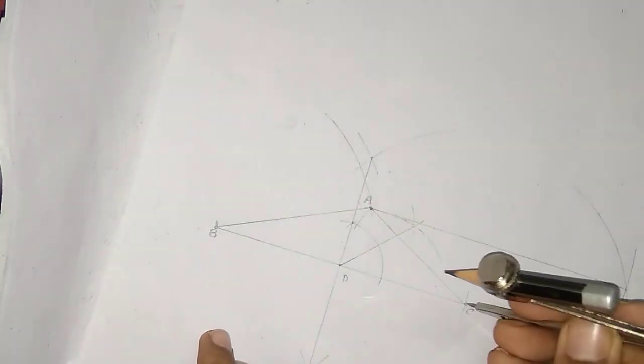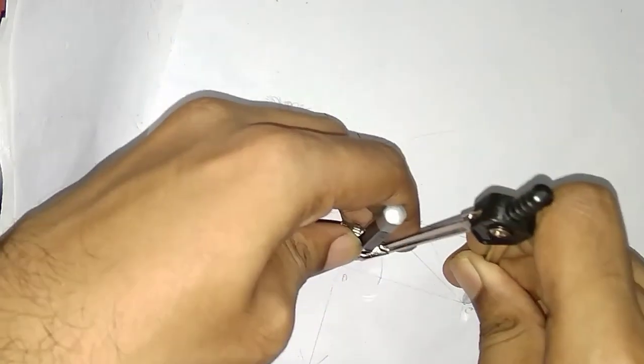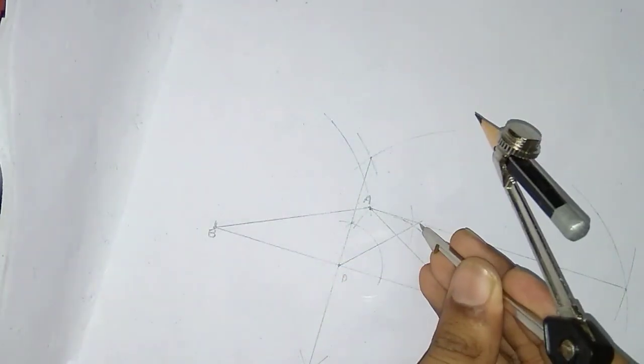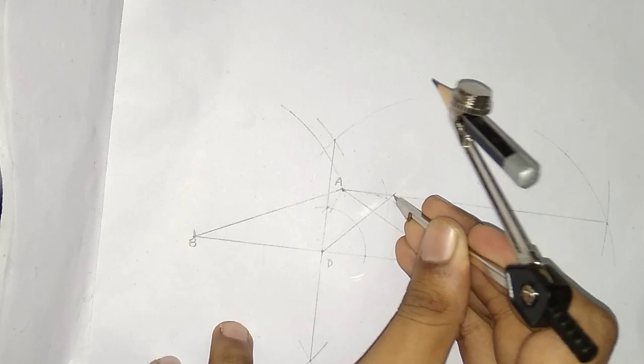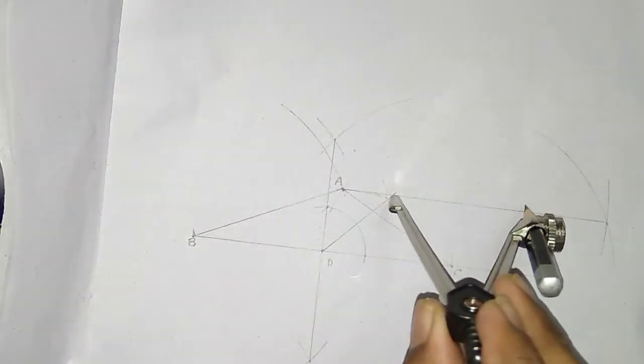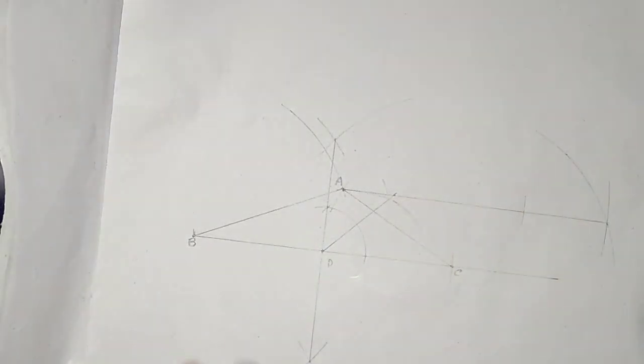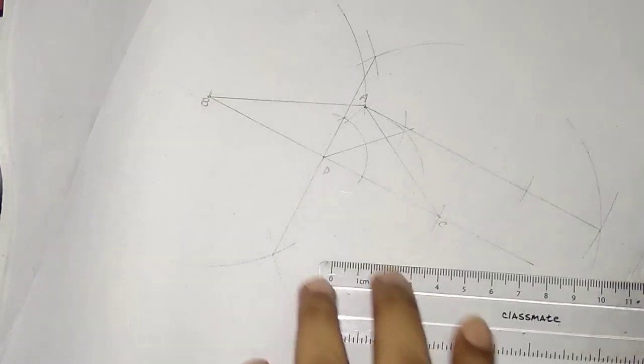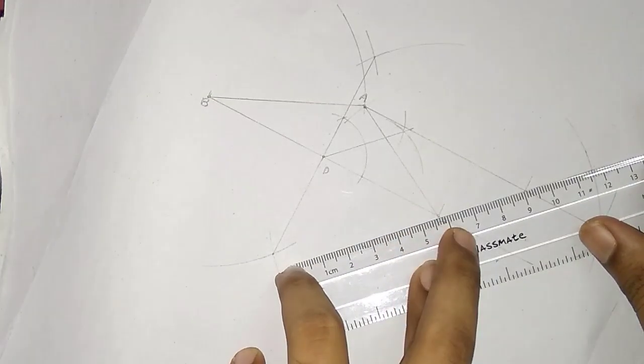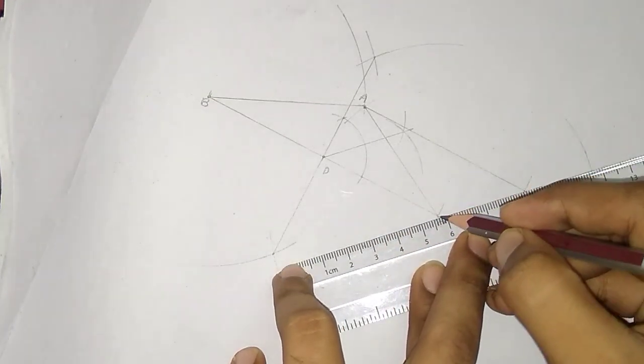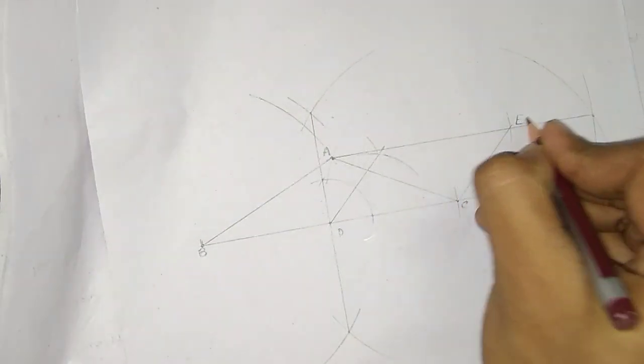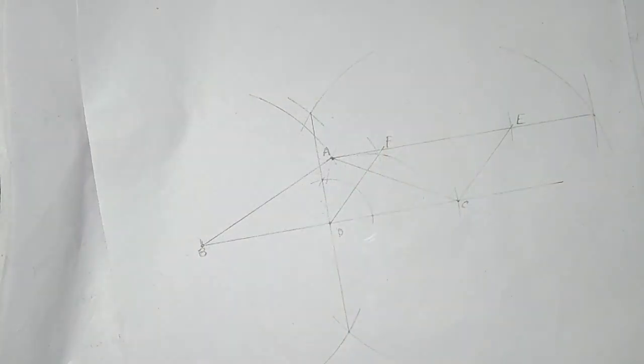Now, by taking the measurement of DC - that means half of the base of the triangle - we just have to mark one arc on the parallel line which we already drew. Now just join this, and name it.